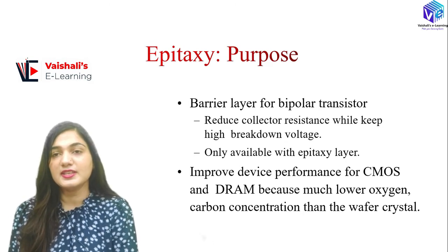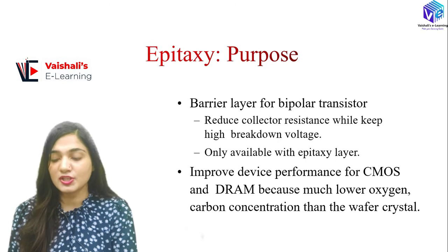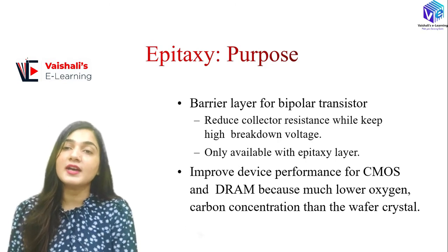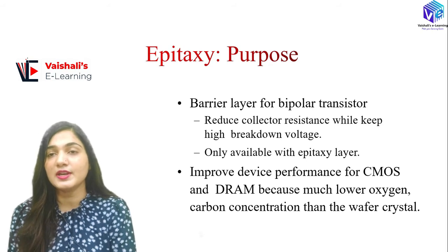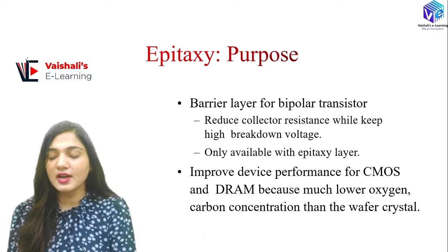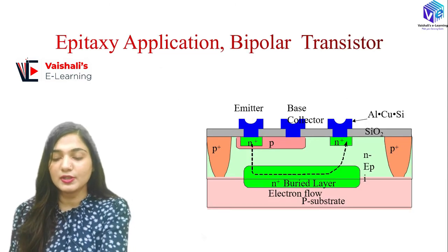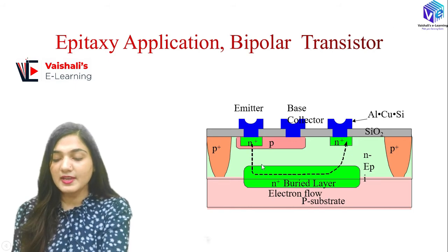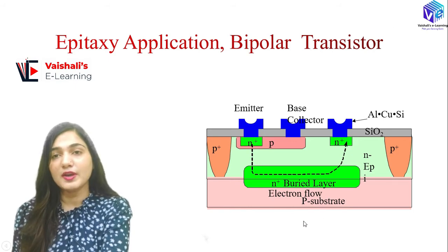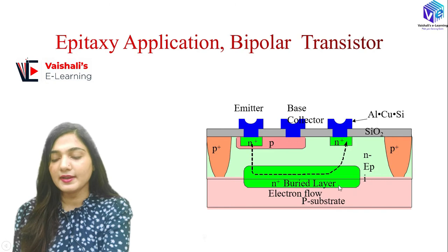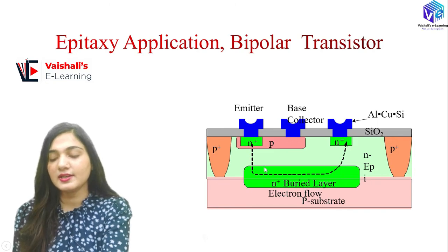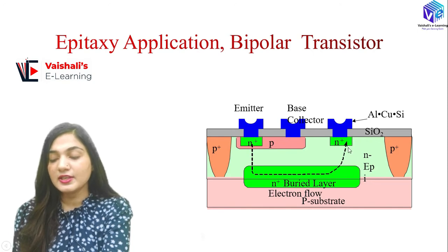For CMOS and DRAM, performance is much better because there is lower oxygen and carbon concentration compared to the bulk wafer crystal. In BJT fabrication, we have a substrate layer, and the buried layer is also an epitaxial layer. There is an epitaxial layer on the substrate — the thin blue layer visible in the diagram is the epitaxial layer.